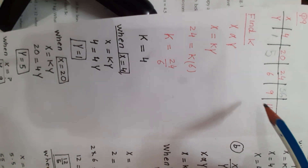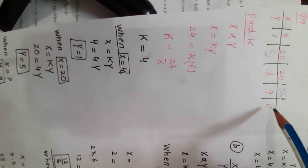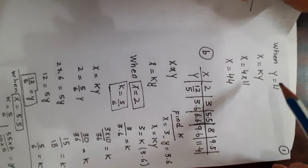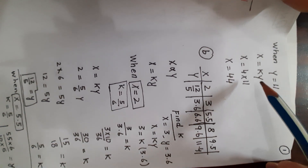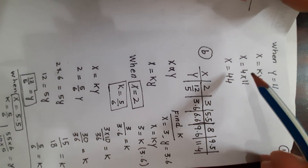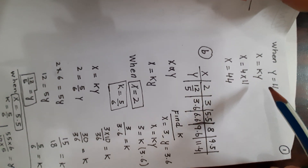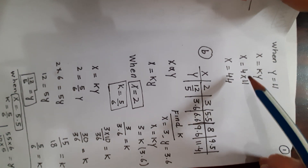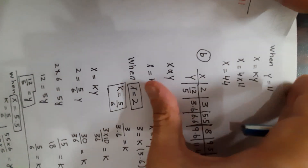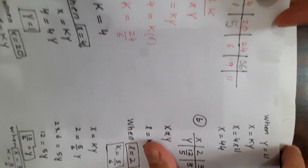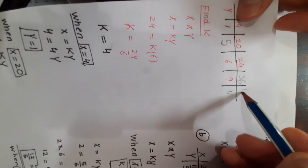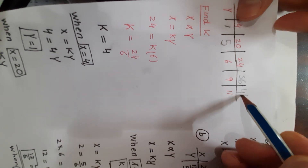Then find x when y is 11. Use the relationship x equals ky, k is 4, y is 11: 11 times 4 is 44, so x is 44 when y is 11. Complete your table with x equals 44.